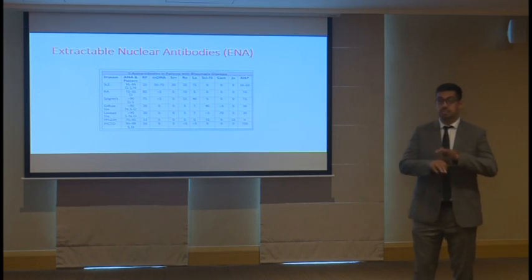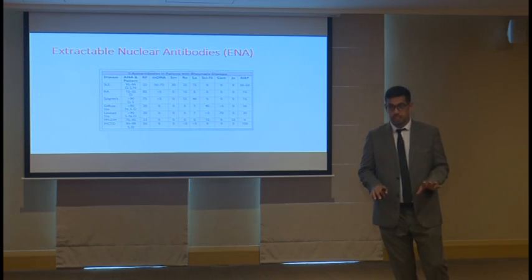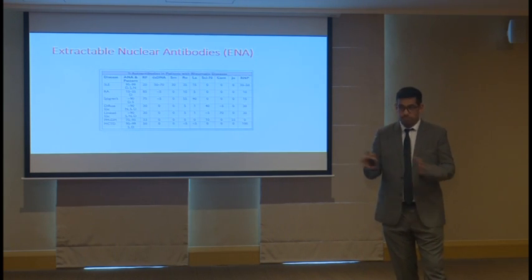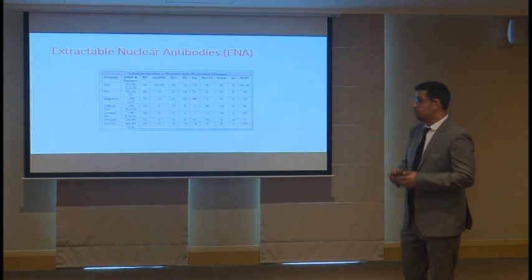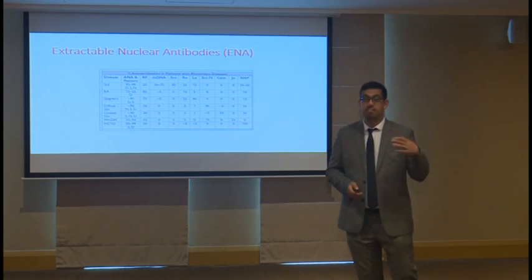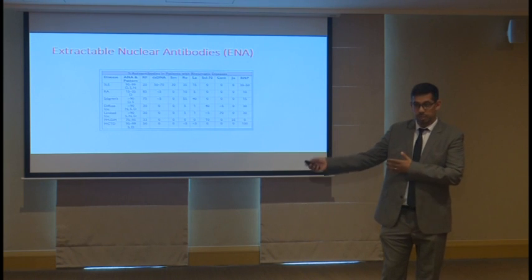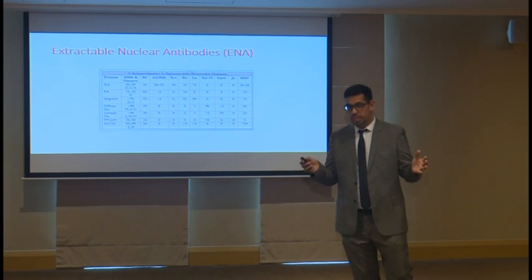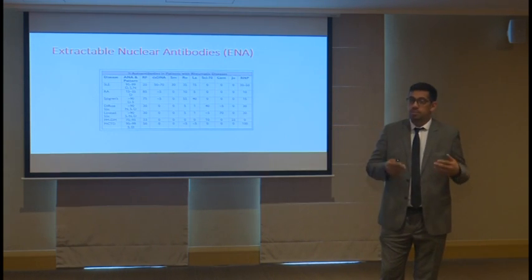ANA is important as a screening tool. If I have a titer of 1:160 or above, the pattern is important because it directs me, and then I do the extractable nuclear antigens panel. In practice, what we order: we order ANA, and if the ANA was positive, automatically the lab will run the ENA panel for me.